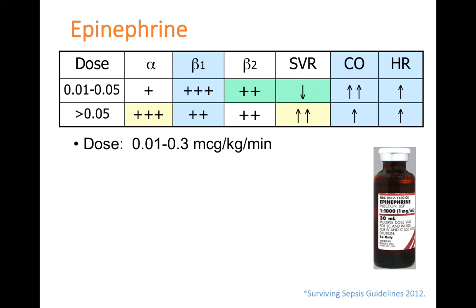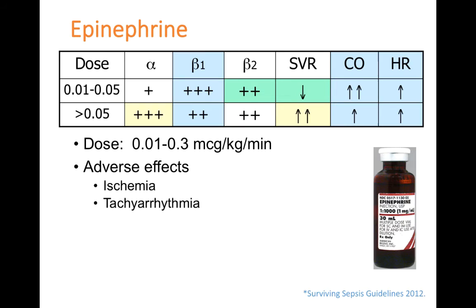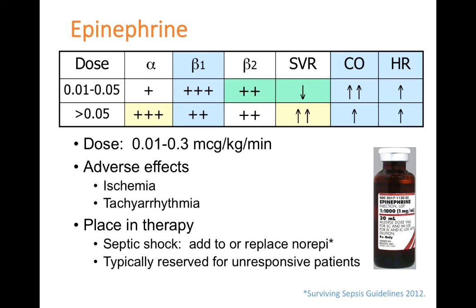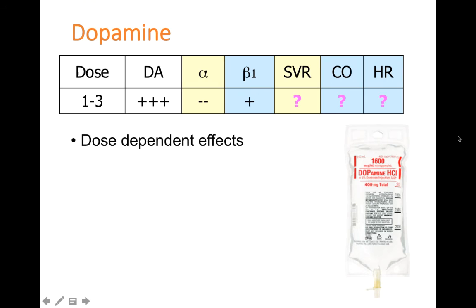Epinephrine can be dosed at 0.01 to 0.3 mcg/kg/min overall. Adverse effects include ischemia (related to alpha-mediated vasoconstriction) and tachyarrhythmias (from beta-1 effects). Per the surviving sepsis guidelines, epinephrine is recommended as an additive or possible replacement for norepinephrine in septic shock, but in practice it tends to be a last-line agent. The reason is that the beta-2 and alpha effects partially work against each other, making epinephrine a less potent vasoconstrictor overall compared to norepinephrine.